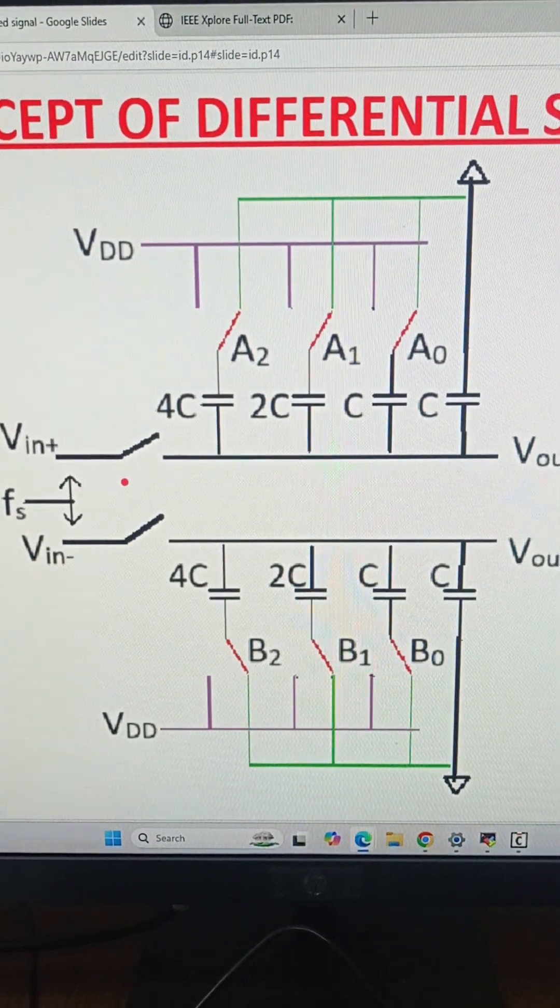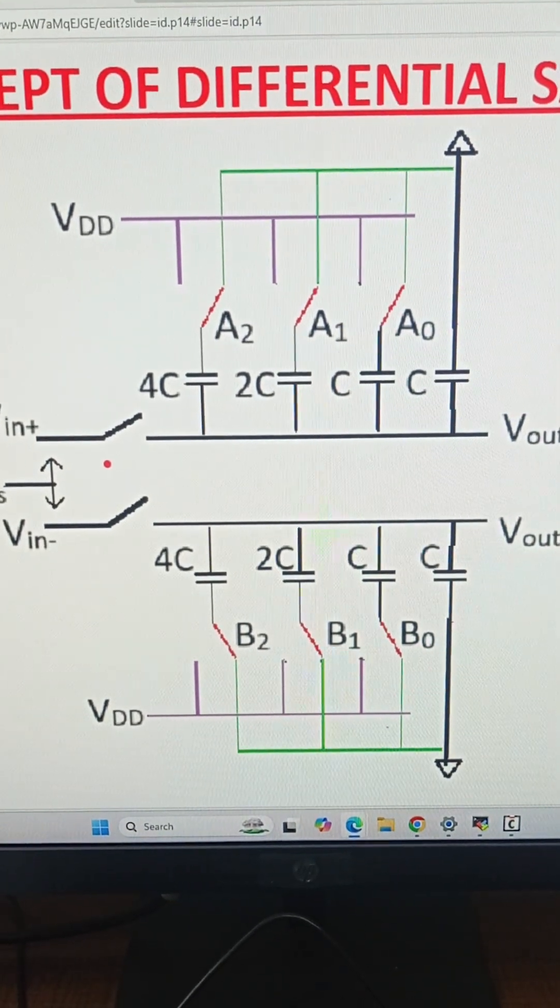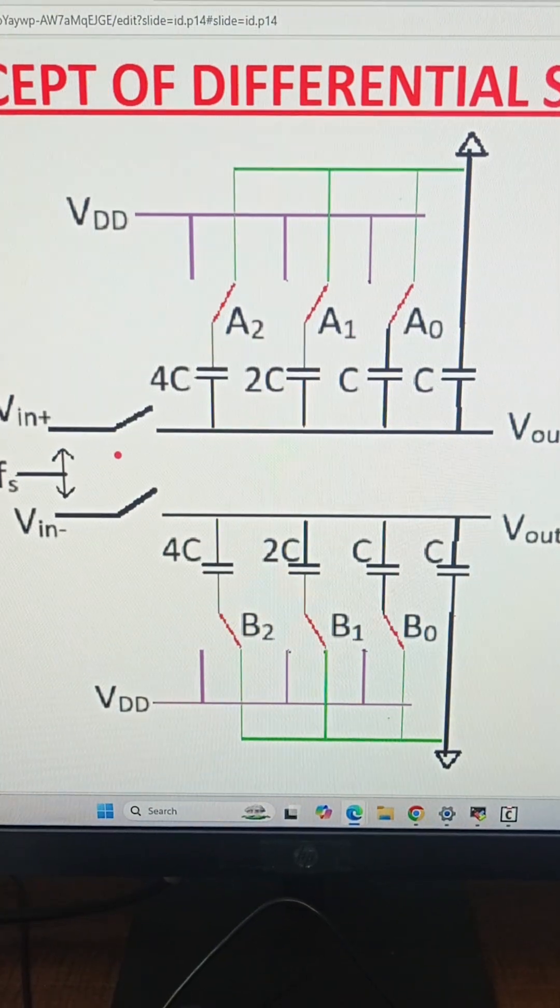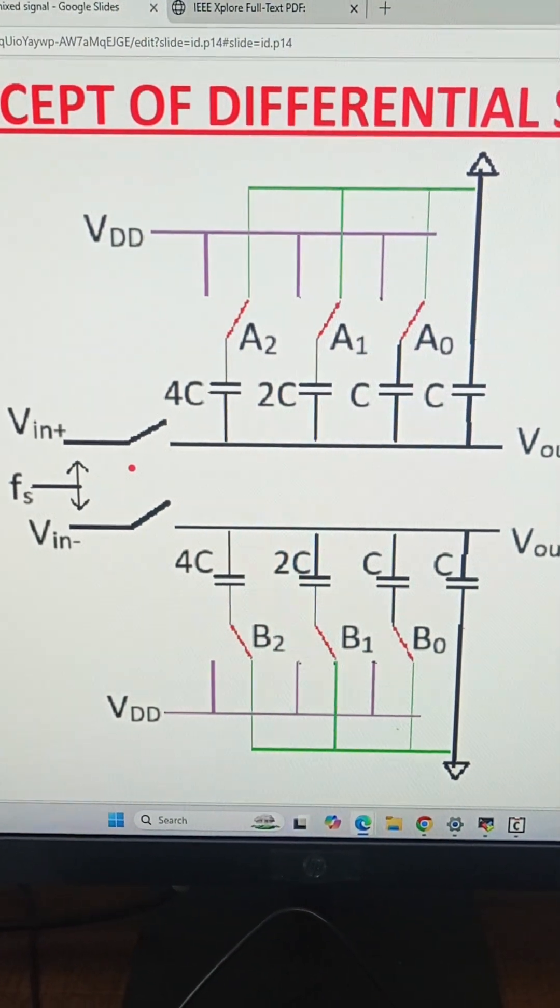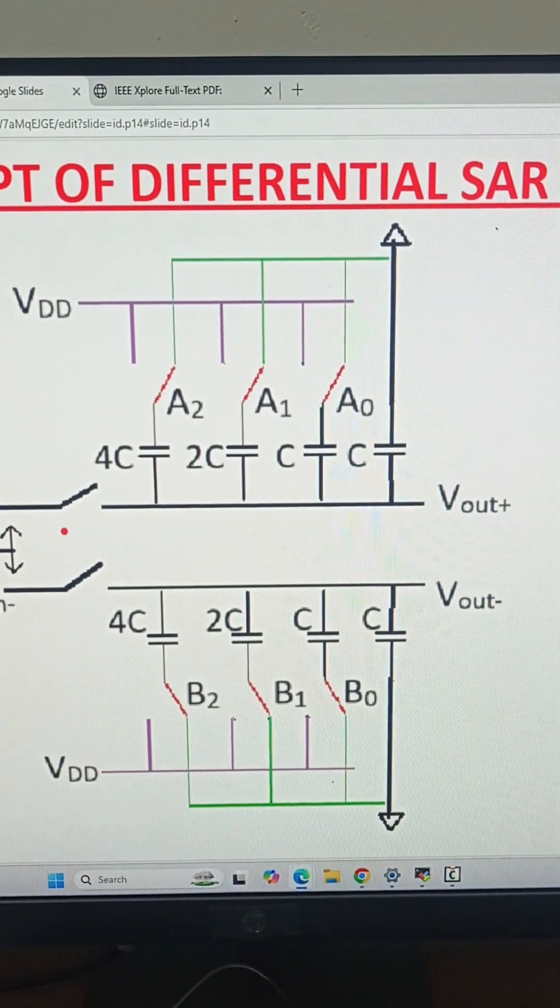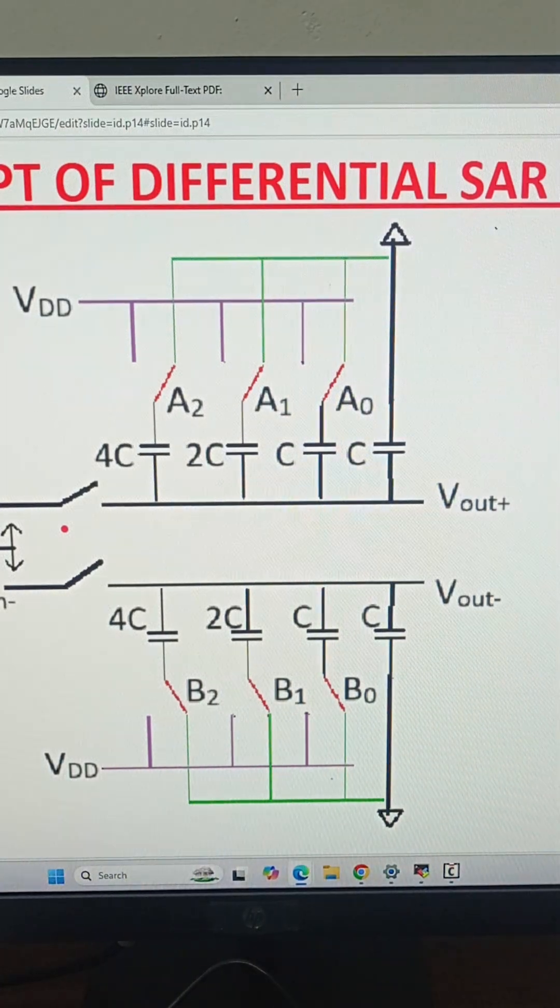Due to the differential topology we have two sets of capacitors 4C, 2C, C, C on top and bottom. First we will sample the input voltages V_in+ and V_in- onto the top plates of the capacitors. The total capacitance that will be seen by the sampling switches will be 8C per side.